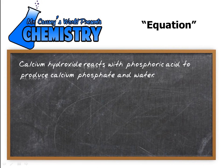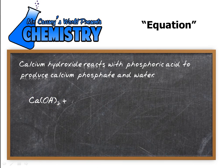Calcium hydroxide reacts with phosphoric acid to produce calcium phosphate and water. Calcium hydroxide is Ca(OH)₂ — we have to make sure we have two OH's there because it has to balance out with the positive calcium. Then we have our phosphoric acid, which gives us our calcium phosphate and our water. And there's our equation.